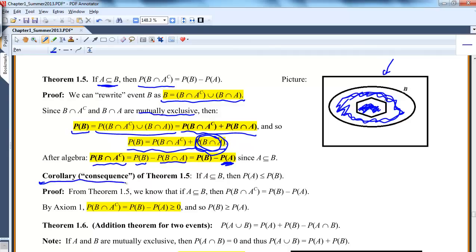A corollary is really just a consequence. A consequence of that theory is that if A is a subset of B, then probability A will be less than or equal to probability of B. If they're exactly equal, they'll be equal. But if A is smaller, and that kind of makes sense, A is within B, the probability of this occurring is less than the probability of this occurring.